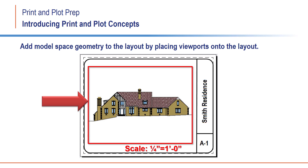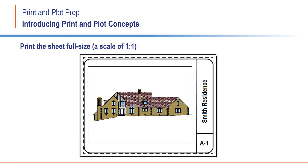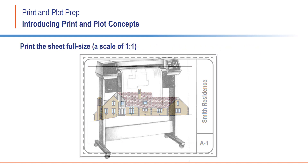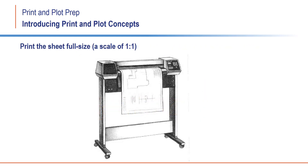You can also add a border and title block drawn in paper space on each layout. Then, when you are ready to print that layout, you print it at full size — in other words, at a scale of 1 to 1.